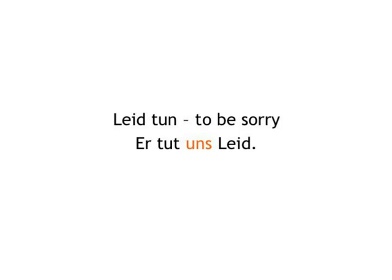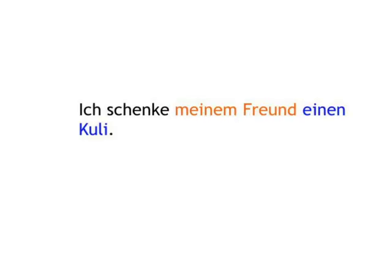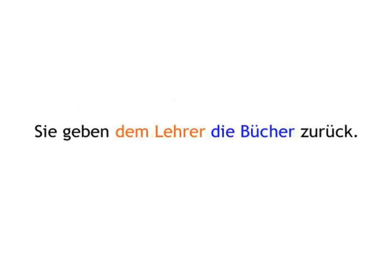The majority of dative verbs have both a direct object — often a thing — and an indirect object — often a person. What comes first in a sentence with two noun objects? That's easy, as the word order is the same as in English: 'I give my friend a pen' — Ich schenke meinem Freund einen Kulli. Or 'you give the teacher the books back' — Sie geben dem Lehrer die Bücher zurück.